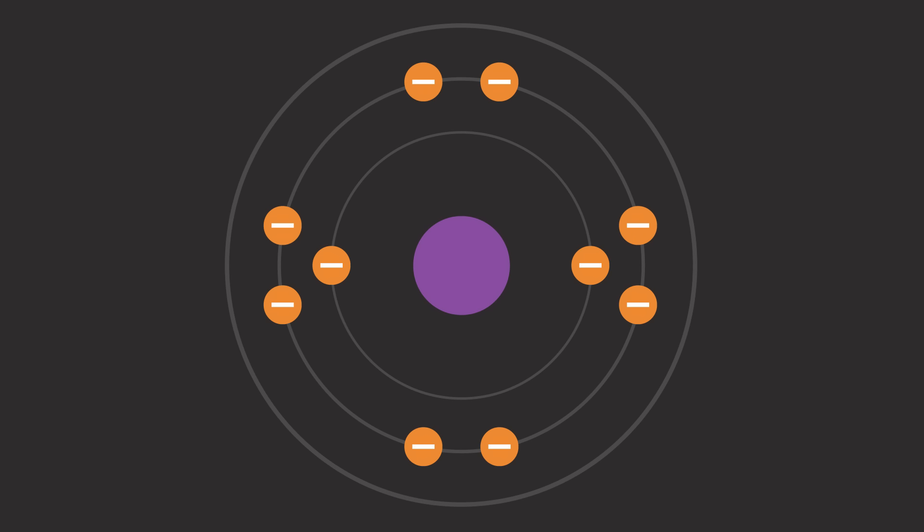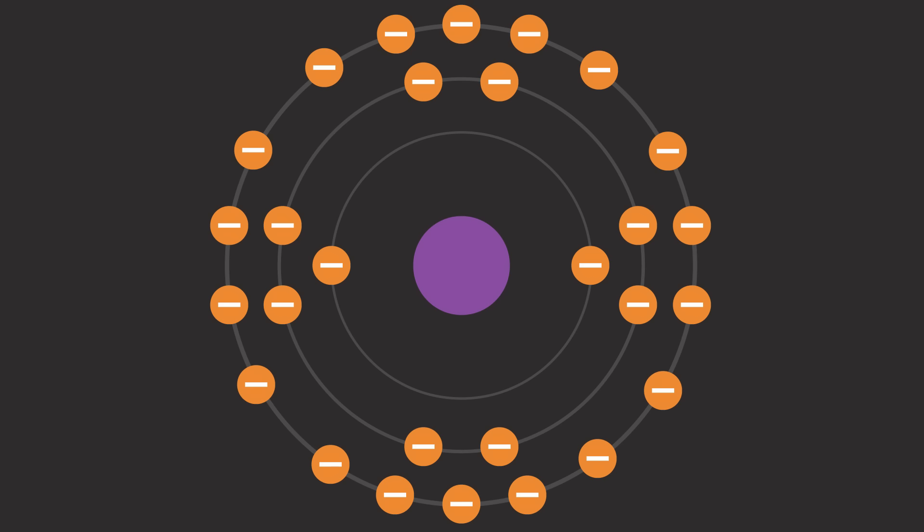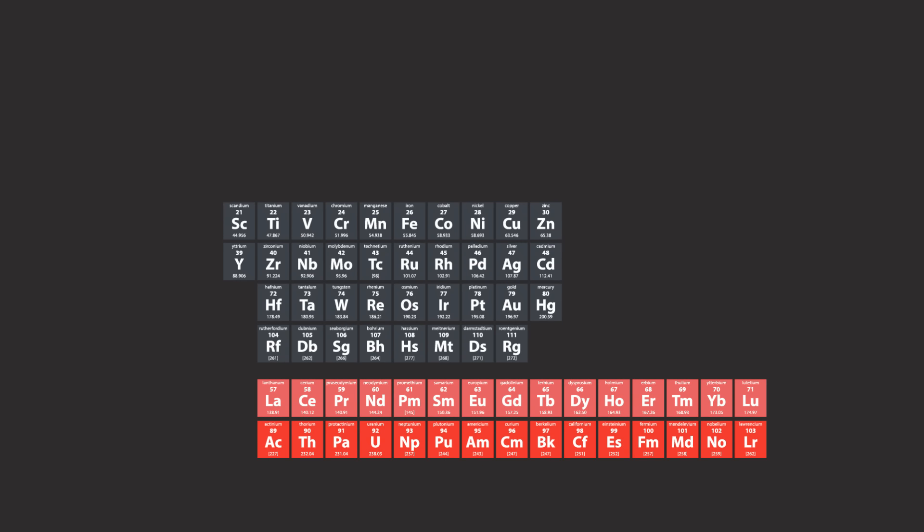The first electron shell can hold up to two electrons. The second electron shell can hold up to eight electrons. The third shell can initially hold eight electrons, though later on it can hold up to ten more, giving us the transition elements.